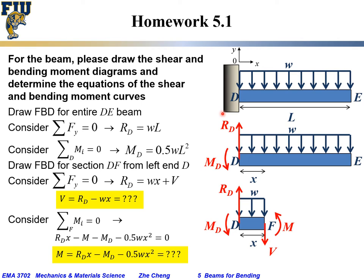We have a DE prismatic beam and it is a cantilever. Prismatic means it has a uniform cross-section throughout the length of the beam. It is a cantilever which means it is fixed at the D end and the E end is hanging free. This beam is experiencing uniformly distributed load W, which typically has a unit of Newton per meter.